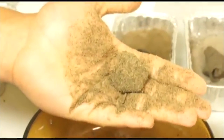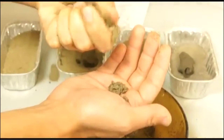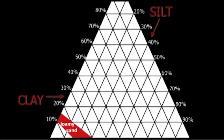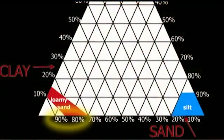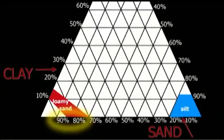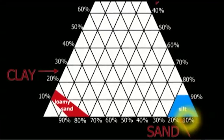If the soil forms a ball but will not hold together as a ribbon, it is either a loamy sand or a silt. The way you decide is by rubbing it between your fingers. A loamy sand will feel very gritty because it's almost completely composed of large particles, while the silt will be completely smooth.